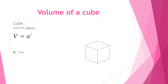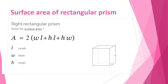To find the volume of a cube we have to use the formula V equals a cubed. You just multiply the edge three times. For example, if the edge of a cube is 6, you multiply 6 times 6 times 6 and that gives you the volume of a cube.